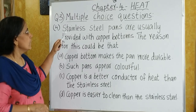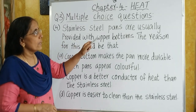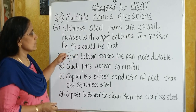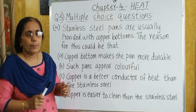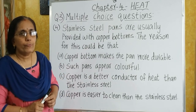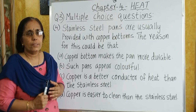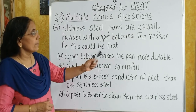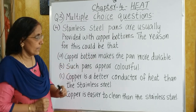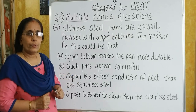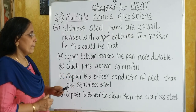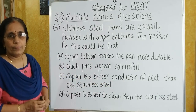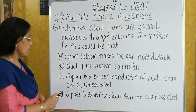Question 4: stainless steel pans are usually provided with copper bottoms. The reason for this could be? We have to remember the property of copper — copper is the best conductor of heat. Copper bottom makes the pan more durable is not correct. Such pans appear colorful is also not correct. Copper is a better conductor of heat than stainless steel — that is option C, which is the correct answer.